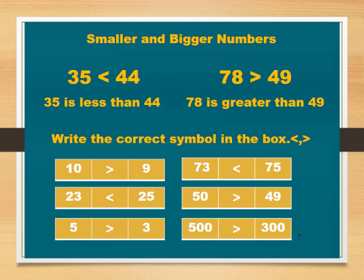Write the correct symbol in the box. In numbers 10 and 9, 10 is bigger than 9. Next, 23 and 25: 23 is smaller than 25. 5 and 3: 5 is bigger than 3.